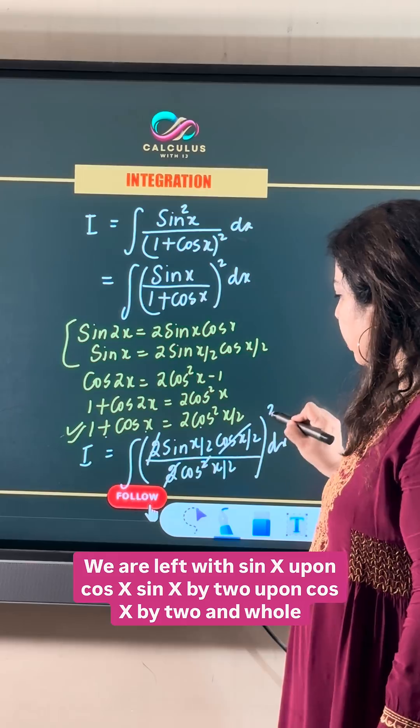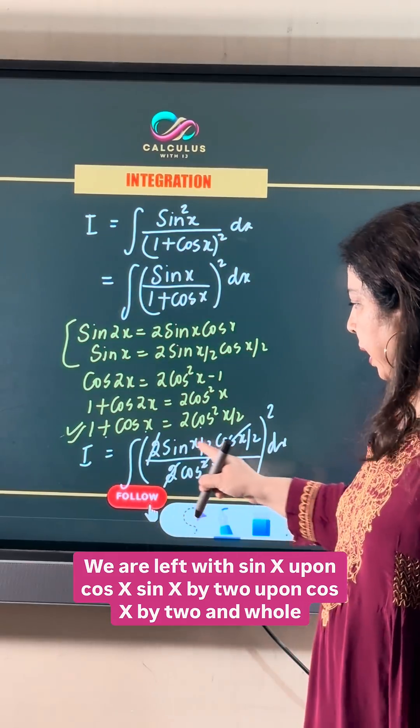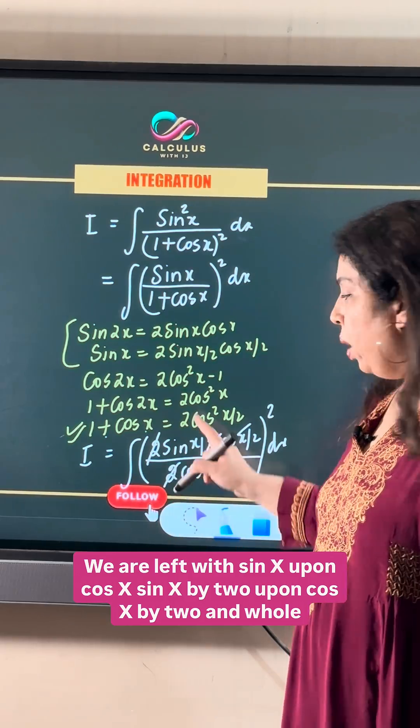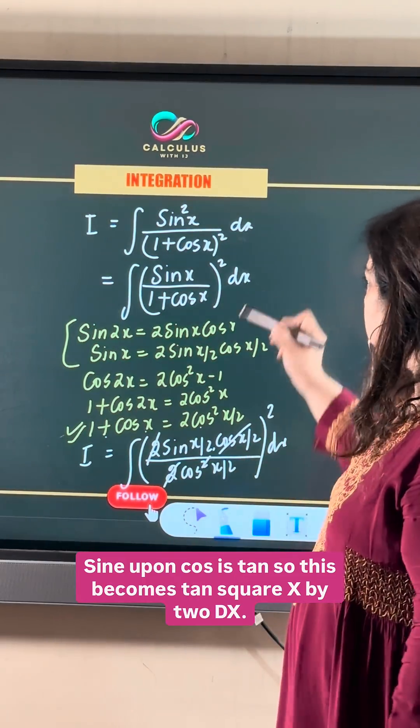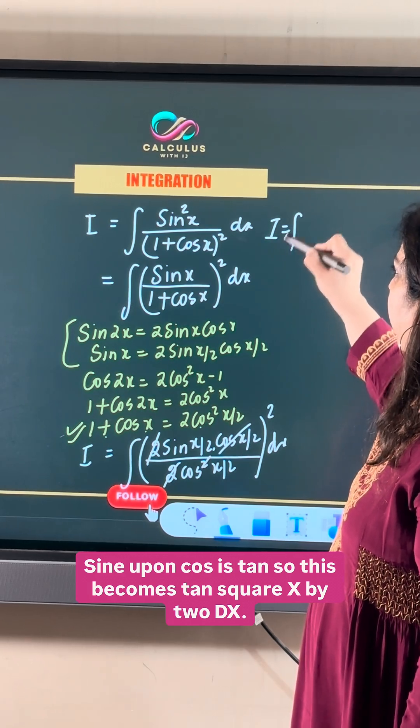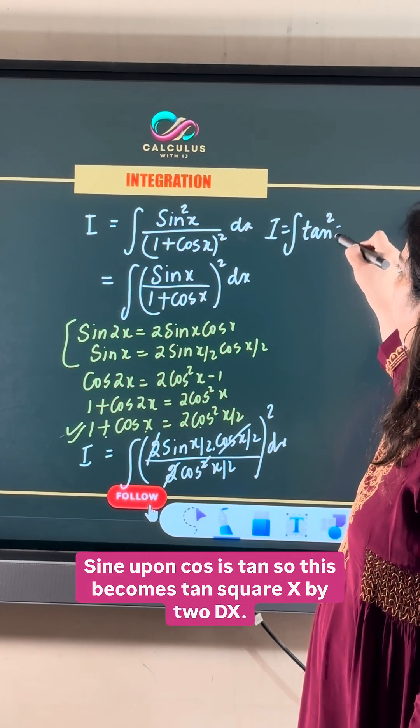We are left with sine x by 2 upon cos x by 2, whole square. Sine upon cos x is tan, so this becomes tan square x by 2 dx.